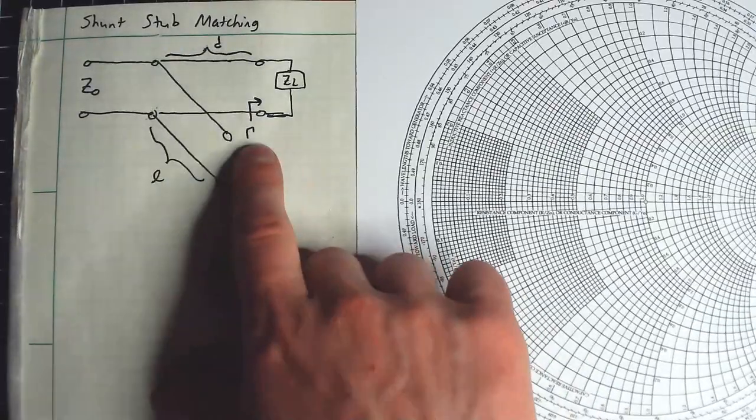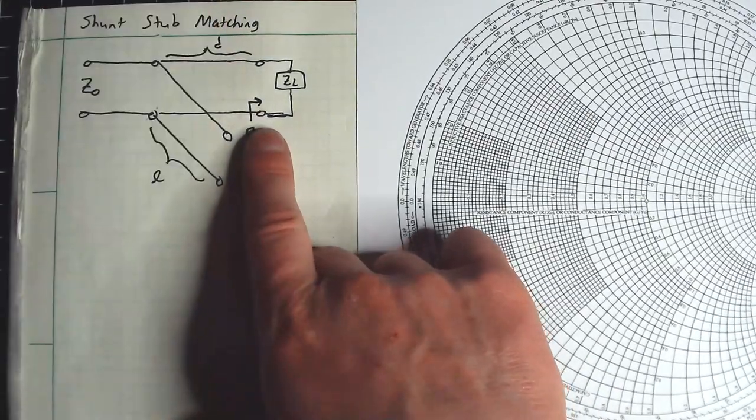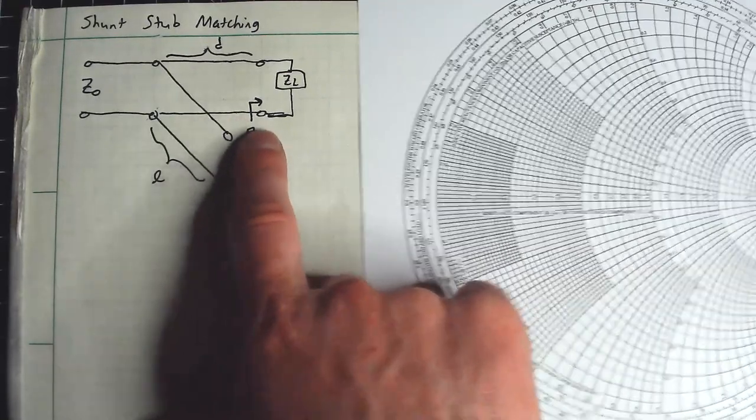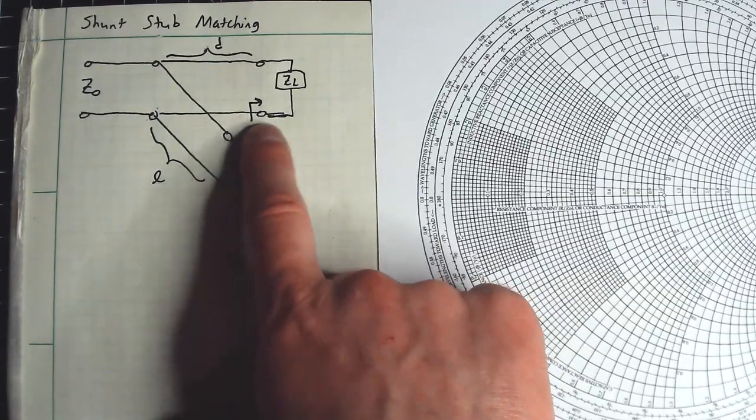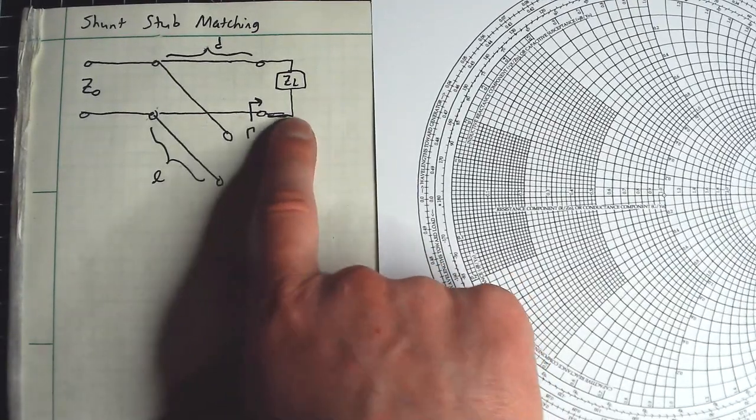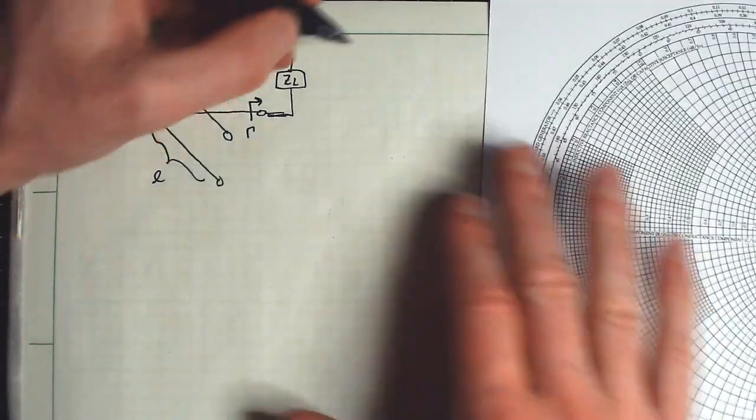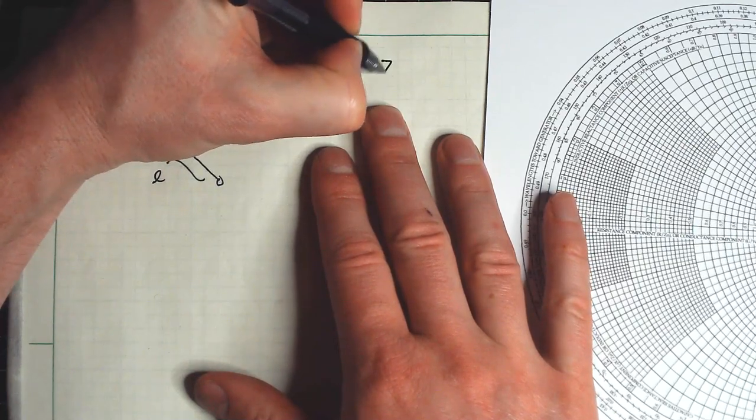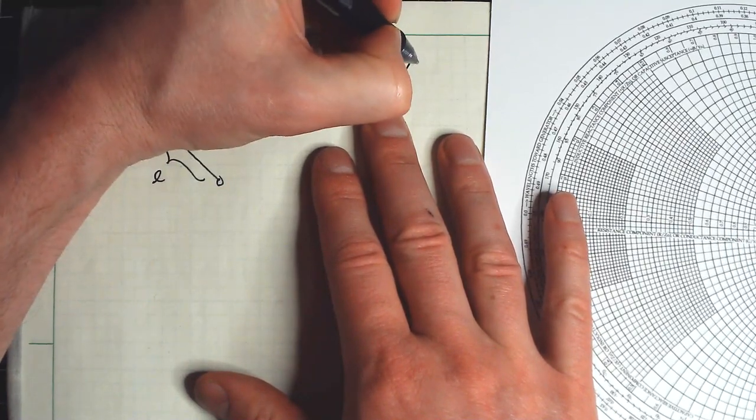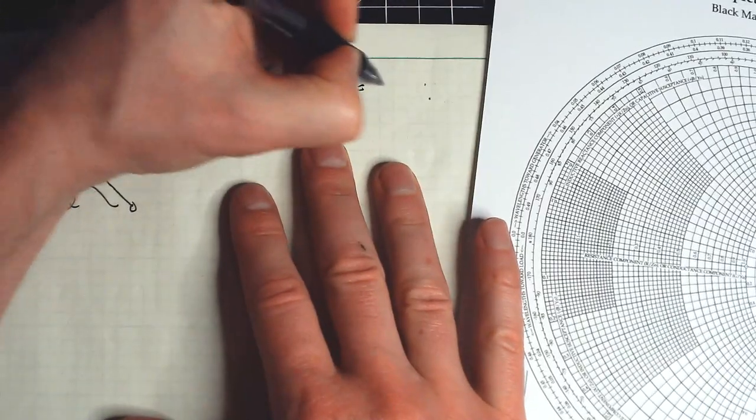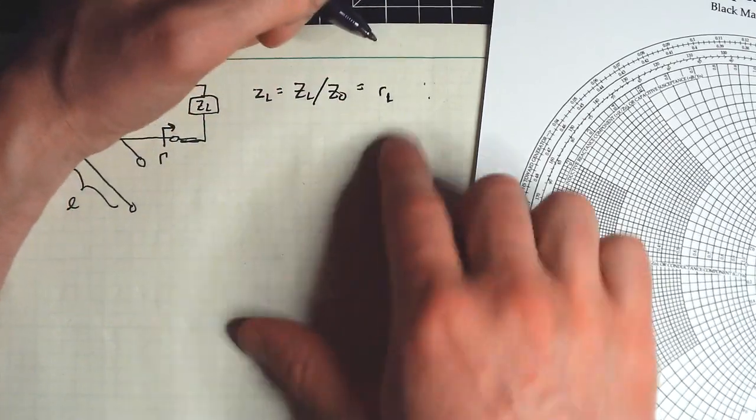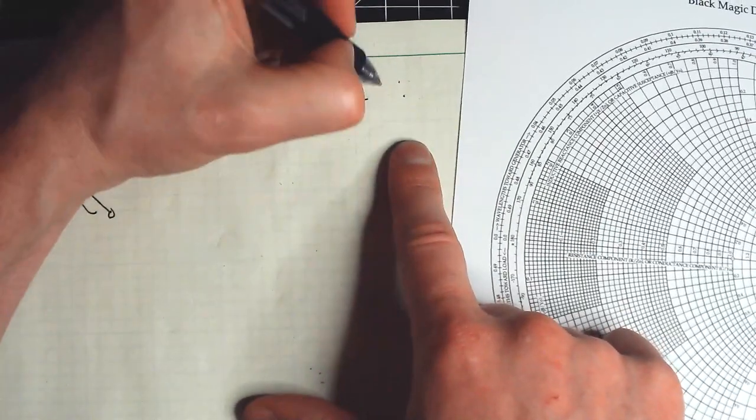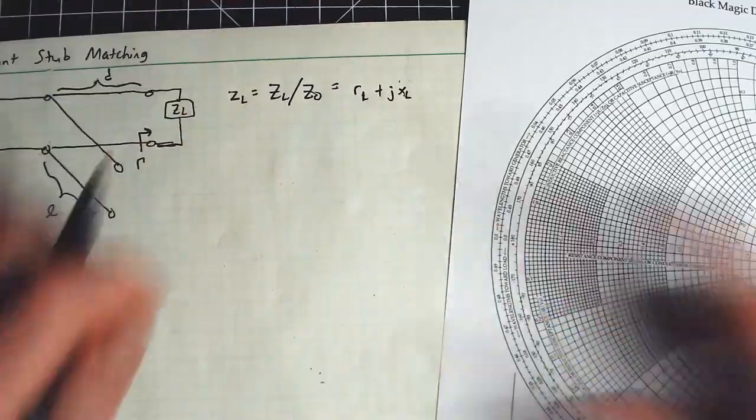Remember, ignore the existence of all this stuff for now. There is just some reflection coefficient between this transmission line and the load. First things first, we could calculate the normalized load impedance as Z_L over Z_0, which will evaluate to some normalized real resistance plus some jX_L.